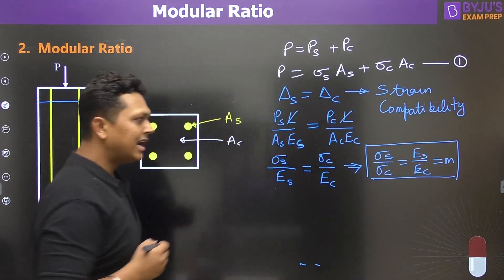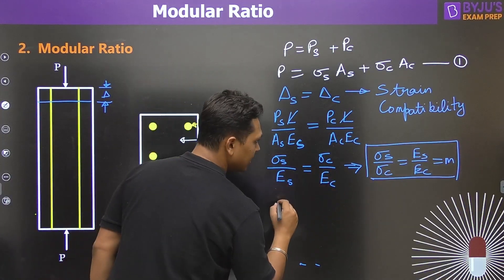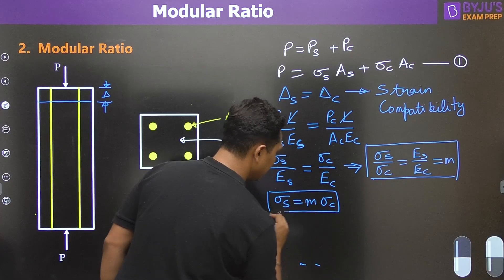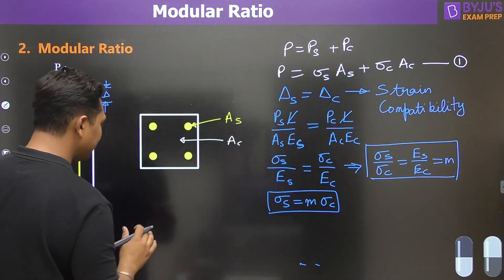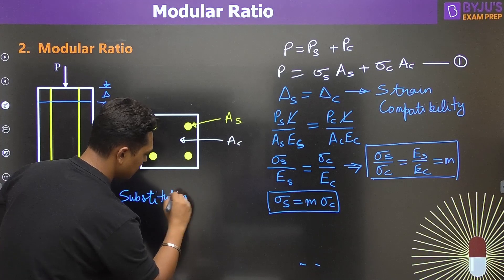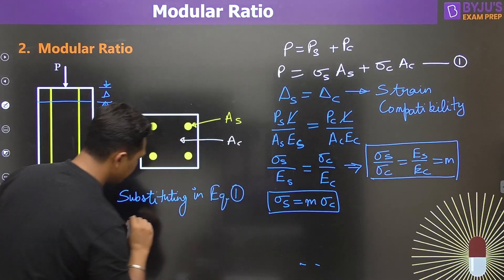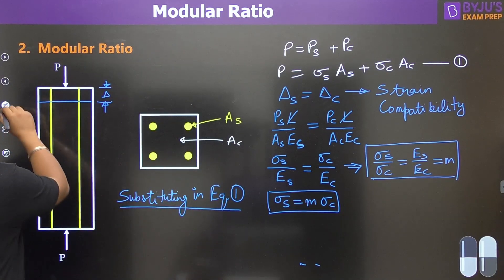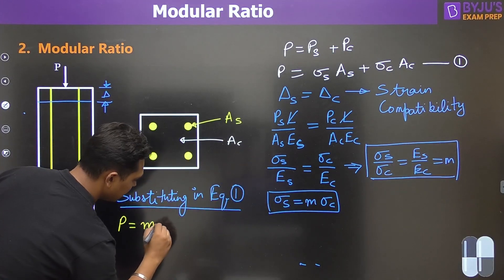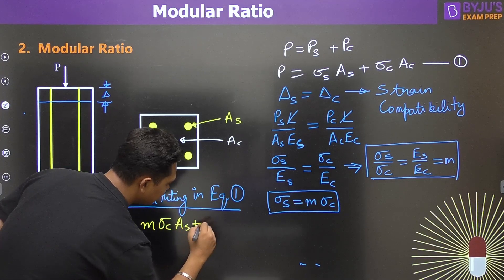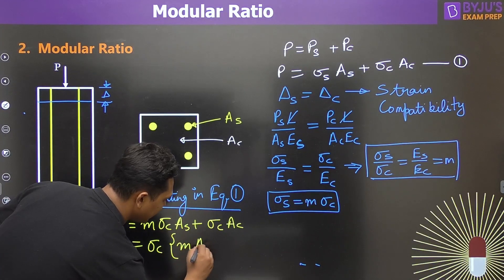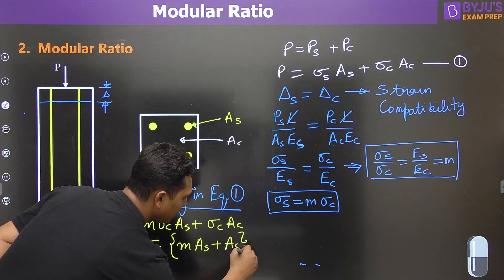From this, σ_steel = m × σ_concrete. Now substituting this into equation one: P = (m × σ_concrete × A_steel) + (σ_concrete × A_concrete). Taking σ_concrete common: P = σ_concrete × (m × A_steel + A_concrete). So m × A_steel is the equivalent area of concrete.